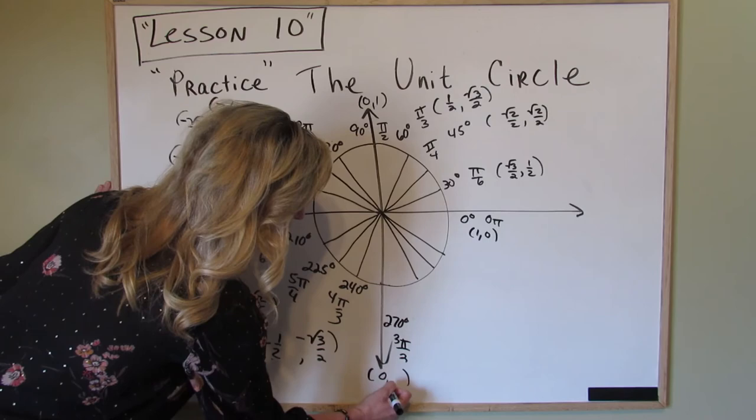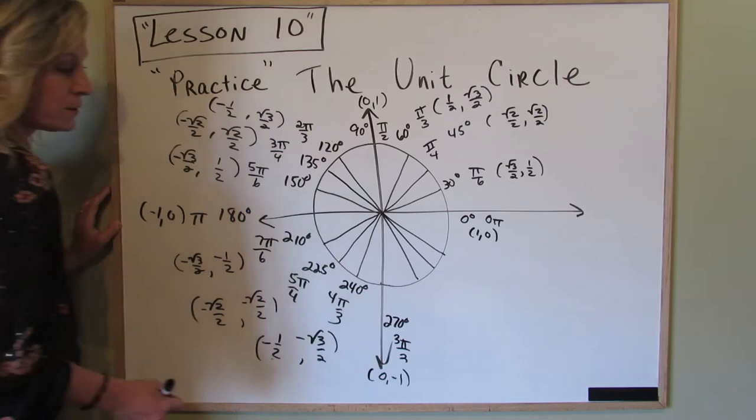Next up is 270. That's 3 pi over 2, and that's the ordered pair 0, negative 1. So the sine is negative 1, the cosine is 0.